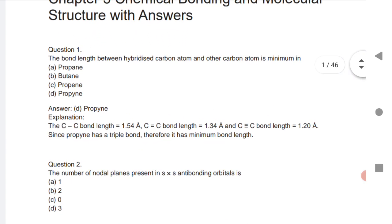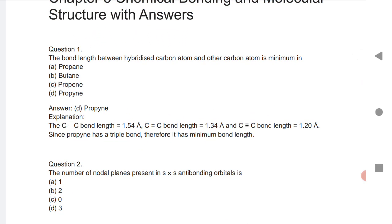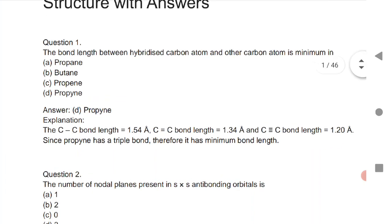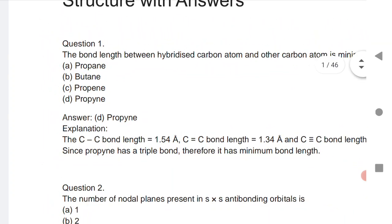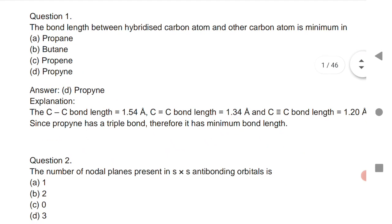Let us see the first question: the bond length between hybridized carbon and other carbon atom is minimum. Carbon to carbon single bond length is 1.54 Å, carbon-carbon double bond is 1.34 Å, and triple bond is 1.20 Å. Among these three, propyne (option D) has a triple bond, so the bond length between hybridized carbons is minimum for propyne.